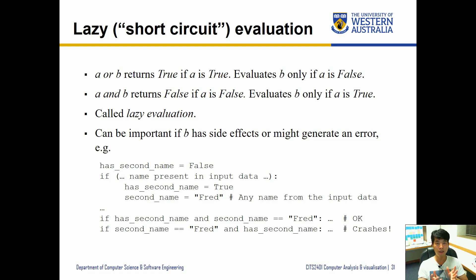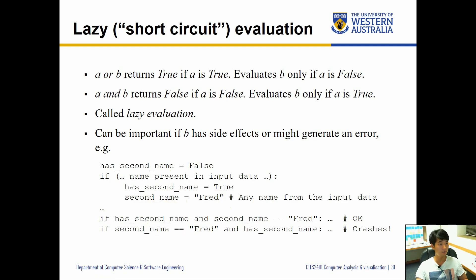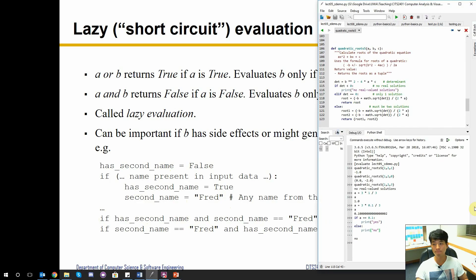This is called lazy evaluation, and Python does this. So it's good to check whether your condition and logic is actually correct. Here's an example: has_second_name equals False, and second_name actually gets established inside an if condition. Then we have two if conditions — one works and the other doesn't, depending on whether the second name exists or not.